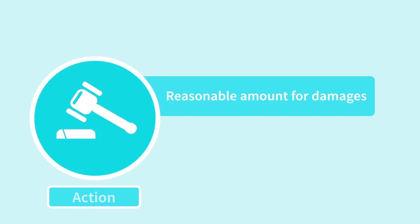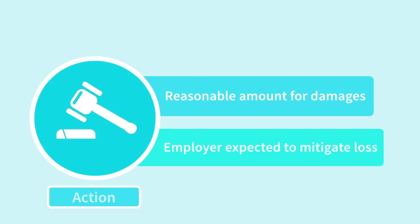As the action is taken for breach of contract, the courts will usually only award damages amounting to the sum that would have been earned if proper notice had been given. The wronged party is expected to mitigate their loss by, say, seeking other employment.